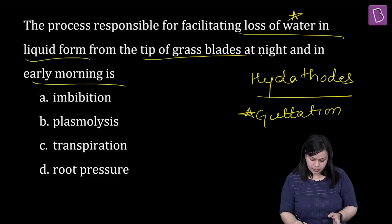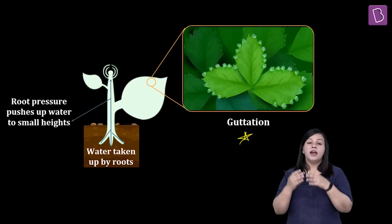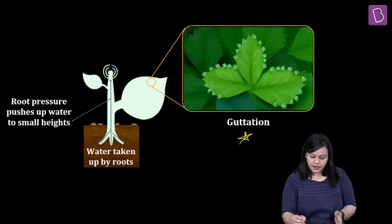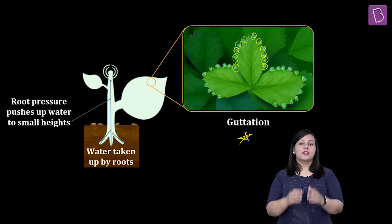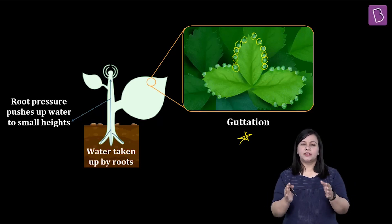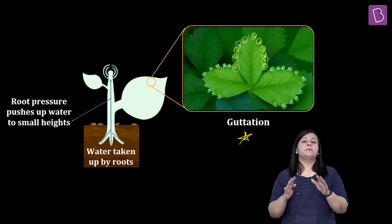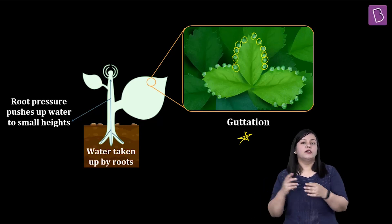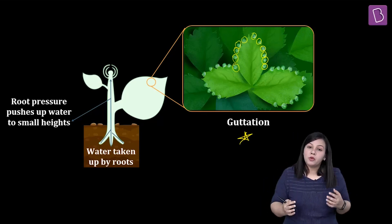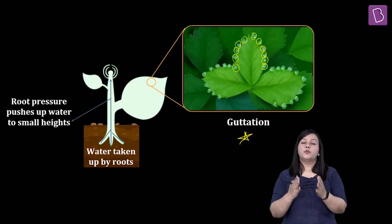Toh hydathodes ke baare mein bata rahi thi. Ek image dikhati hoon jisse aapko samajh mein aayega. Ye hai bahut sundar image showing guttation. Guttation mein aapko liquid ke droplets dikti hain, specially leaf ke margin ke vahaan se. Ye jo paani kathha hua hai wahan — yeh kyun hua hai? Specially during late night when temperature is low and during early morning — the dawn time. Jis time pe temperature kam hota hai, us time pe soil bhi thodi si moist hoti hai, so plants mein paani kaafi zyada kathha ho jaata hai — it really gets accumulated within the plant.